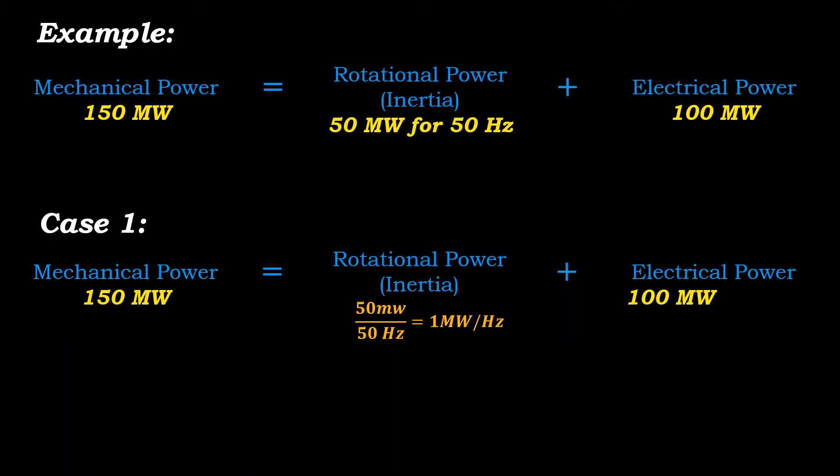Now consider load of rating 100 megawatts and let's say that the rotor requires additional 50 megawatts of power to maintain the frequency at 50 hertz. To keep it simple, we can say one megawatt is required to increase the frequency by one hertz.